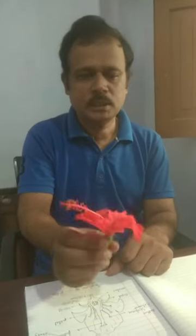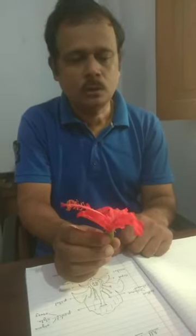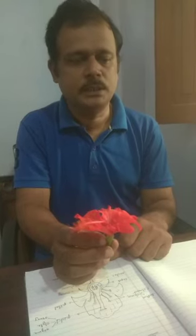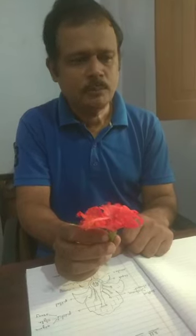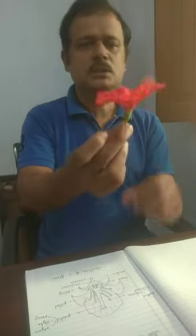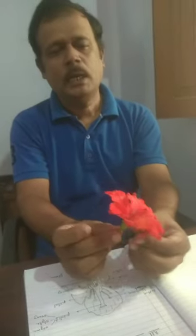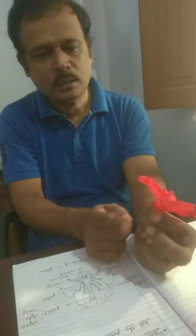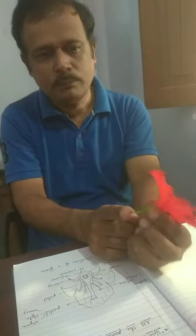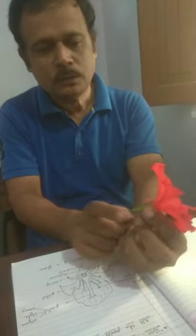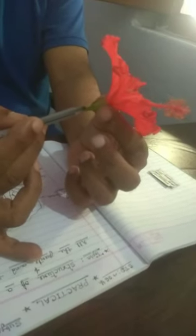This is a complete flower and all four parts are present in it. First, let us understand the structure. The basal part of the flower is called the pedicel. The upper part of this is called the thalamus, and from the thalamus, a green part is present in the flower.